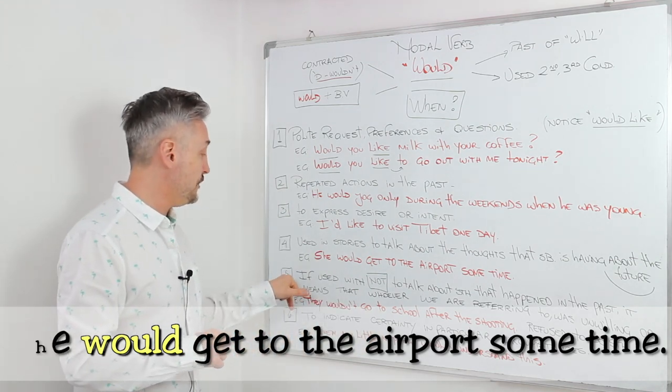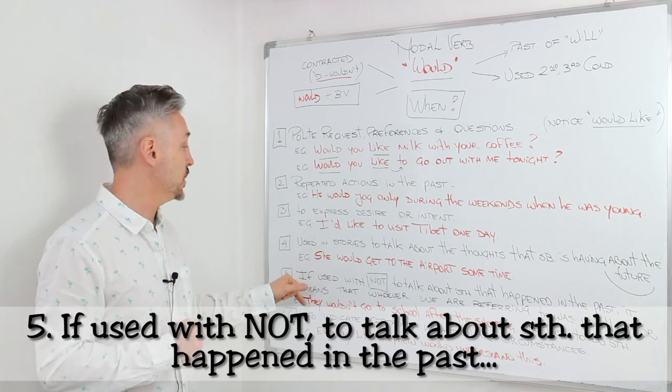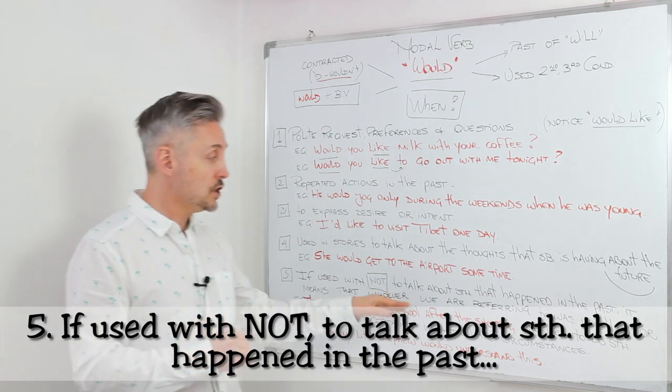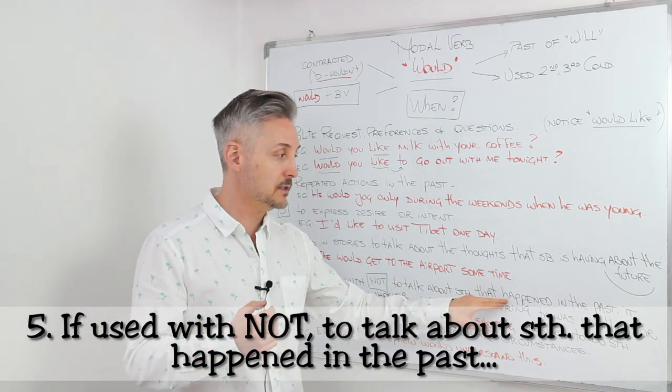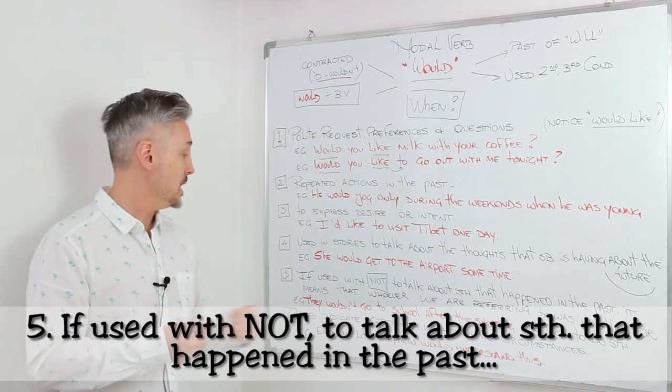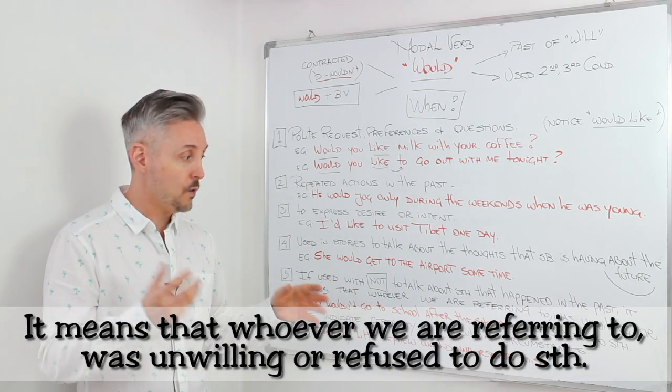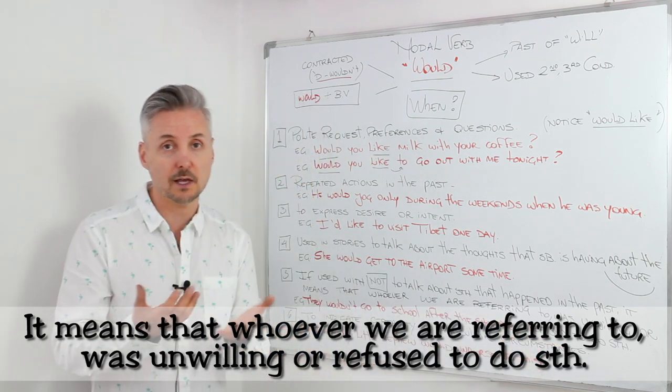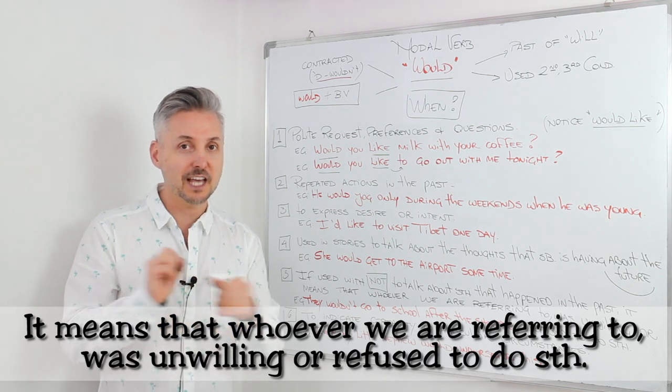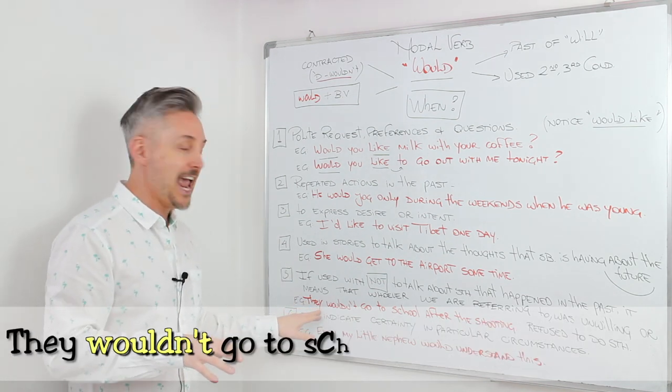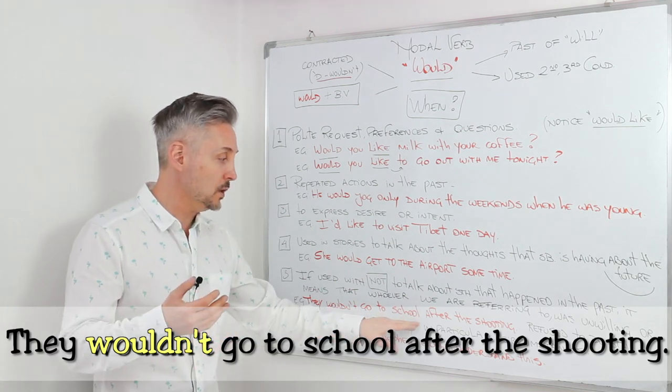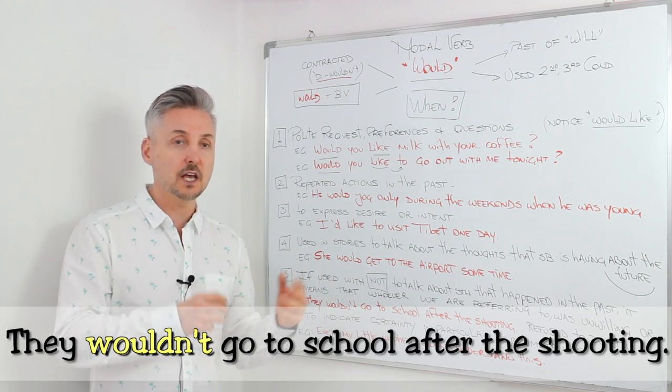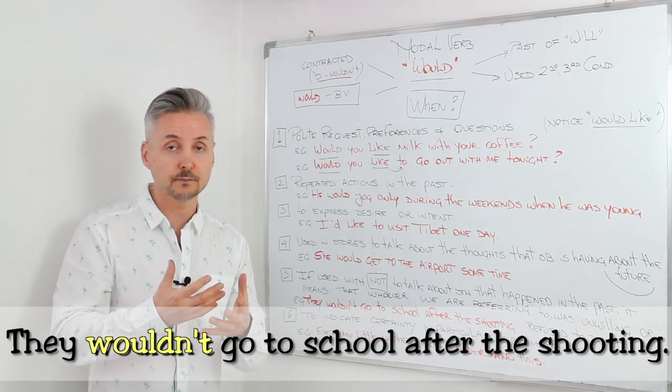Now, the fifth situation where we find would. If used with not to talk about something that happened in the past, it means that whoever we are referring to was unwilling or refused to do something. It's better with the example to understand it. They wouldn't go to school after the shooting. So the children, after they heard the shooting, they wouldn't go to school.